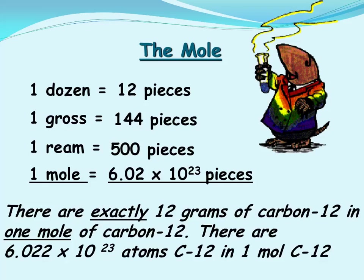We use it to talk about the number of atoms of an element. The standard is the isotope carbon-12. 12 grams of carbon-12 contains exactly 6.02 times 10 to the 23rd atoms.